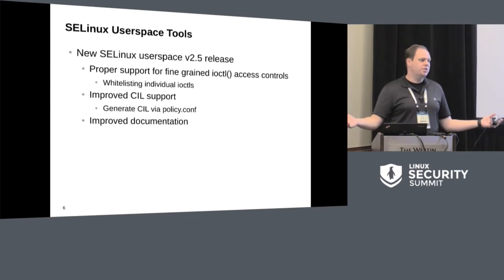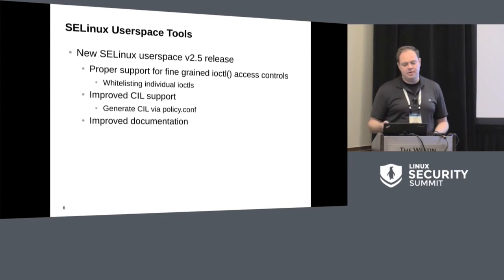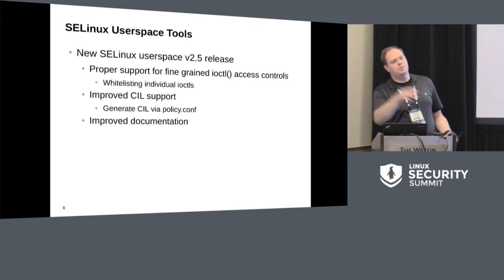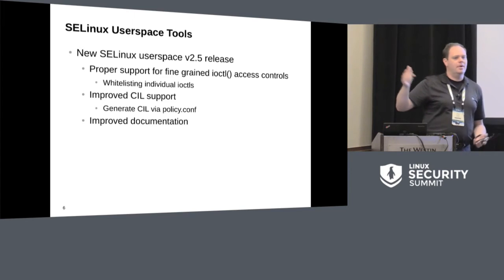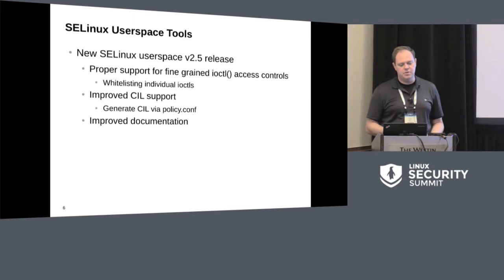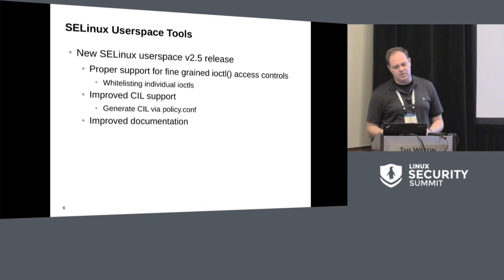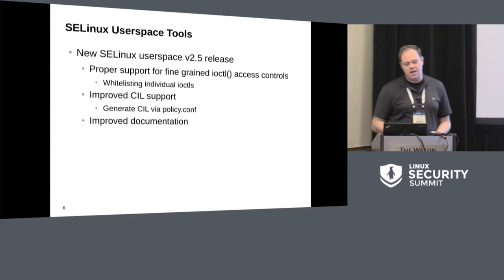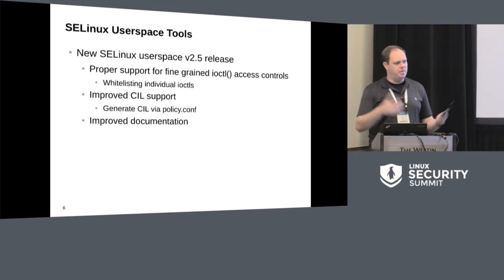User space: we had a new SELinux user space release earlier this year — version 2.5. Last year I talked about finer-grained ioctl access controls. The Google guys worked hard to give us that, and that support has now trickled into user space, so you can whitelist individual ioctls. We also have better SIL support — you can actually generate SIL via policy.conf now — better documentation, and the usual bug fixes and small improvements.